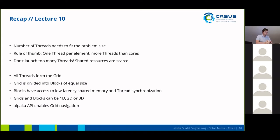All threads form a grid and a grid is divided into blocks of equal size. The blocks have access to low-latency shared memory and also thread synchronization — you can synchronize threads inside a block, but not across the whole grid. Grids and blocks can be laid out in a 1D, 2D, or 3D fashion. Through the Alpaca API you have access to a grid navigation, so you can identify your thread on the grid and also inside a block.